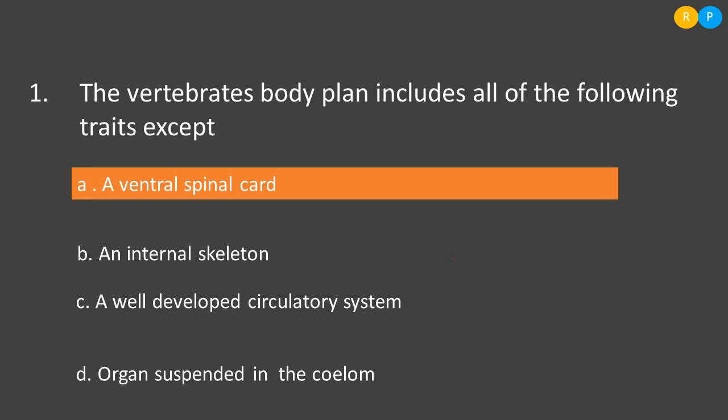Vertebrate animals are well developed compared to invertebrate animals, and there are lots of differences in characteristic features between these two groups of animals. In the options, some traits are given and we have to select which trait is not present in vertebrates. The first option, Option A, is the ventral spinal cord.